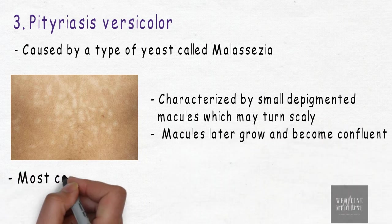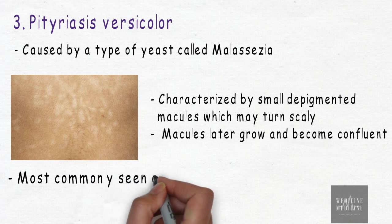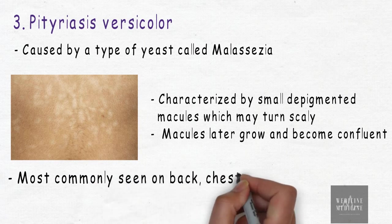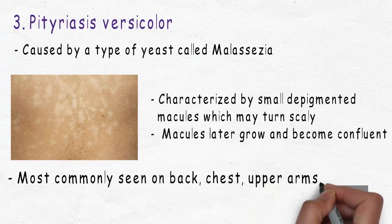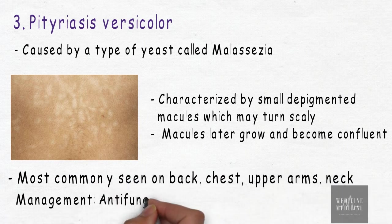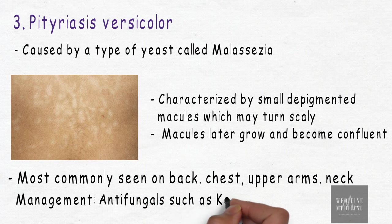The lesions are most commonly seen on the back, chest, upper arms, and neck. Management can be done with antifungals such as ketoconazole.